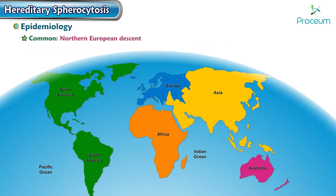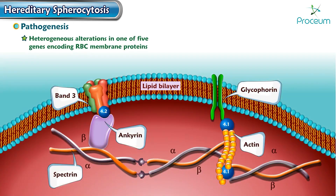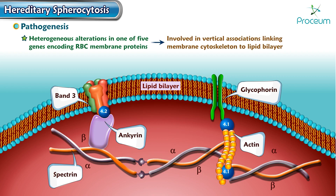It is more common in people of Northern European descent. Regarding pathogenesis, it results from heterogeneous alterations in one of five genes that encode red blood cell membrane proteins. These proteins are involved in vertical associations that link the membrane cytoskeleton to the lipid bilayer.